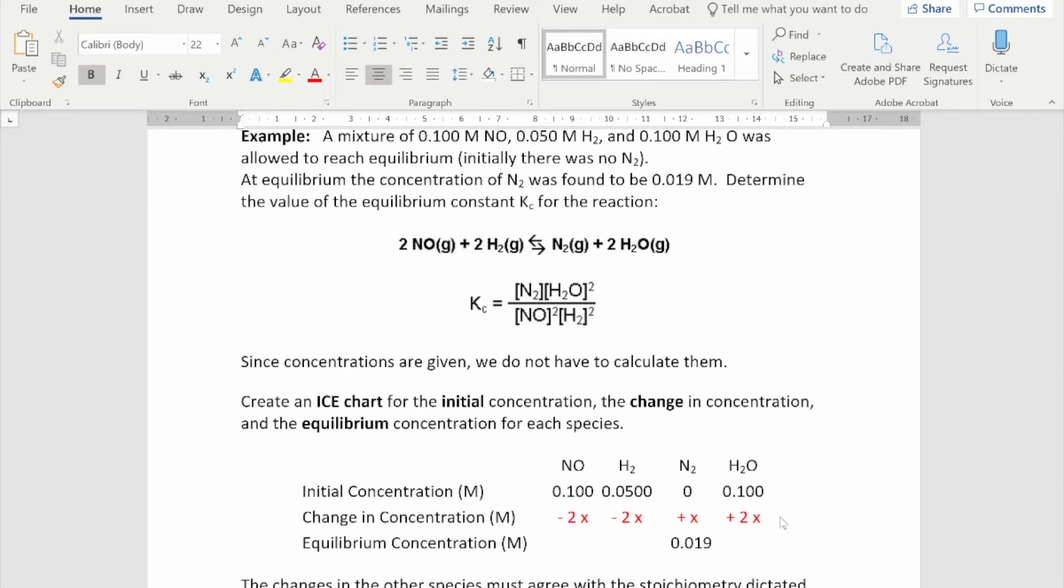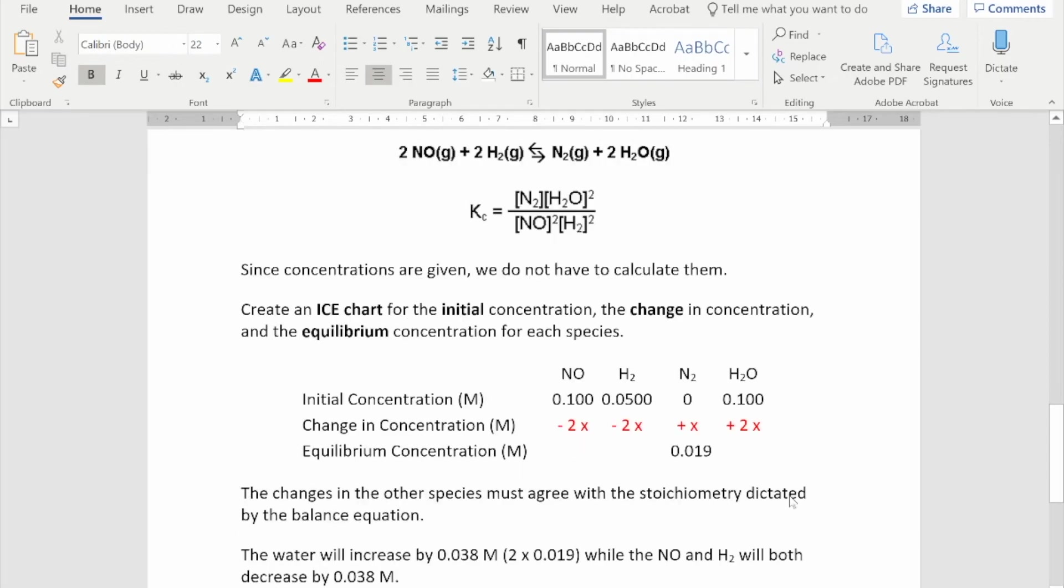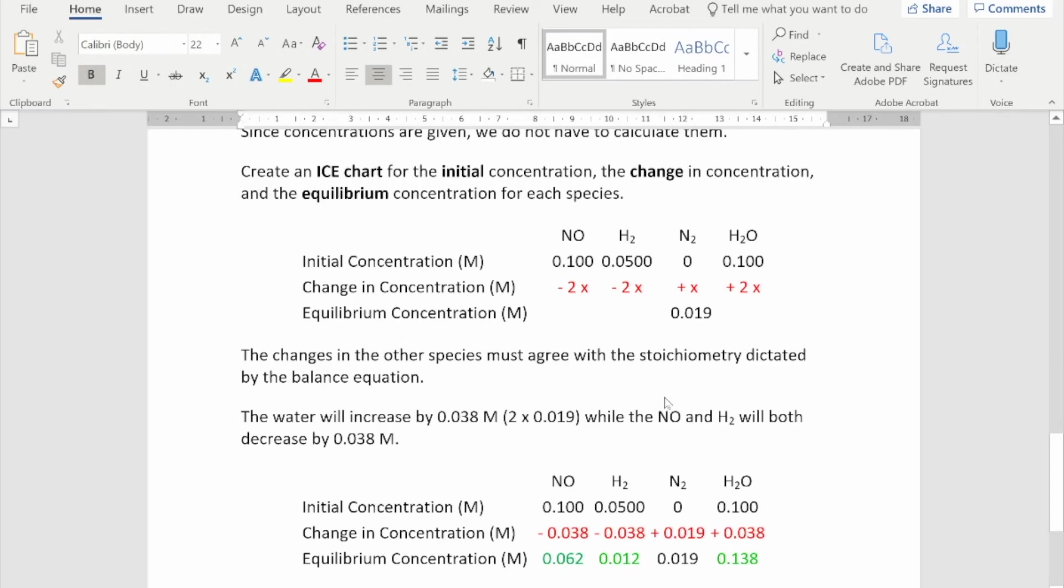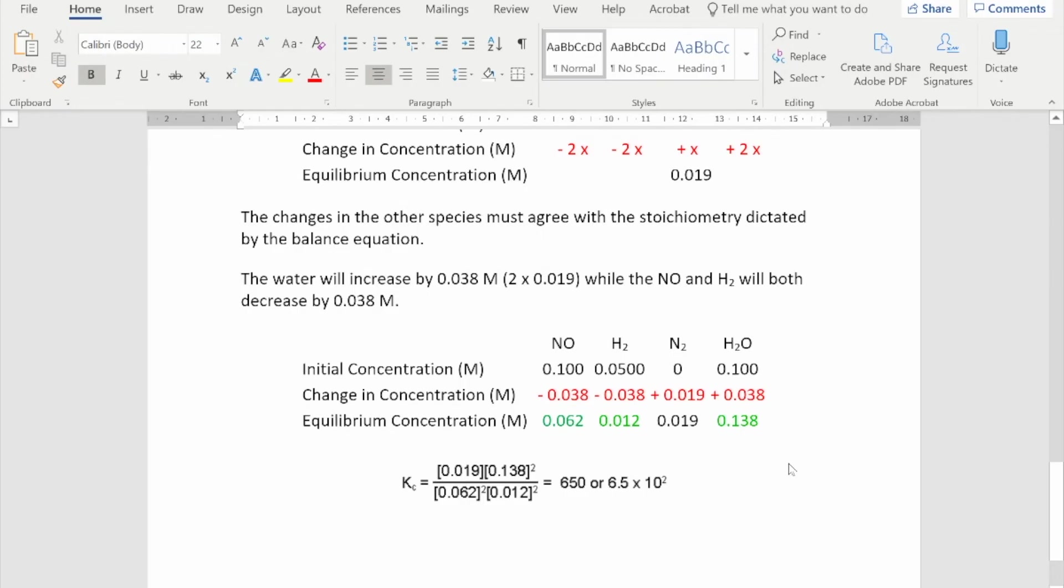You may go straight to those values if you choose. I'm showing you what I feel is the safest way of getting these right, because you're not missing any steps, and you're not trying to jump any steps. Always a dangerous thing to do, one stage at a time, and then you won't get it wrong. So 0.019 is X, which means then the other values will be as you can see there. So with the original values, 0.1 take away 0.038 is 0.062. 0.05 take that away is 0.012. And 0.1 plus 0.038, because we're forming the water, gives us 0.138. Then again, substitute those values into the K expression.